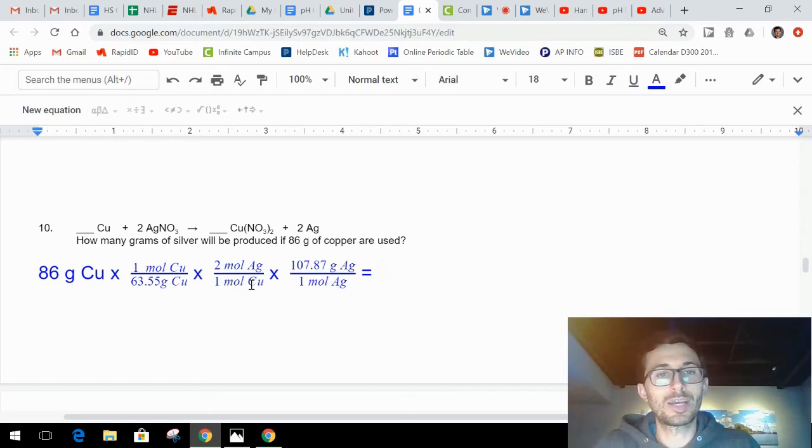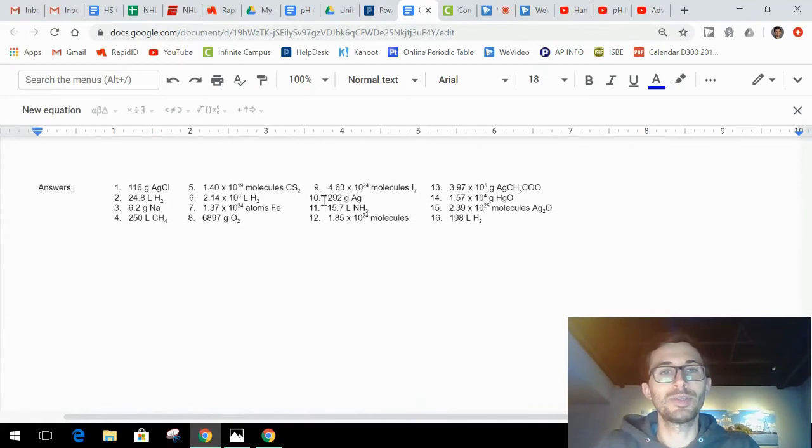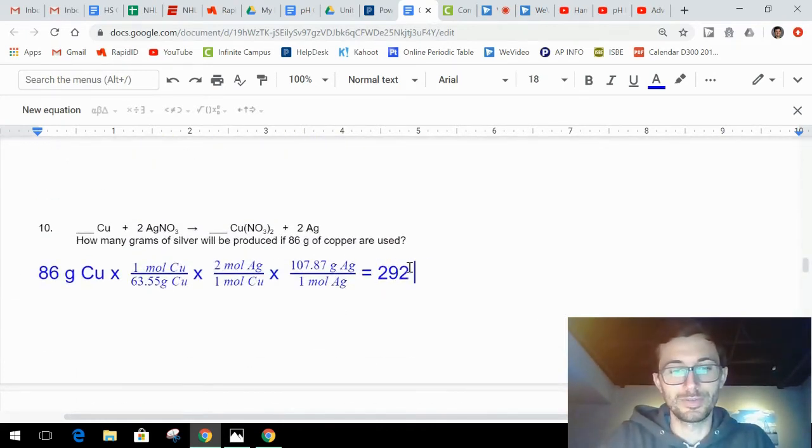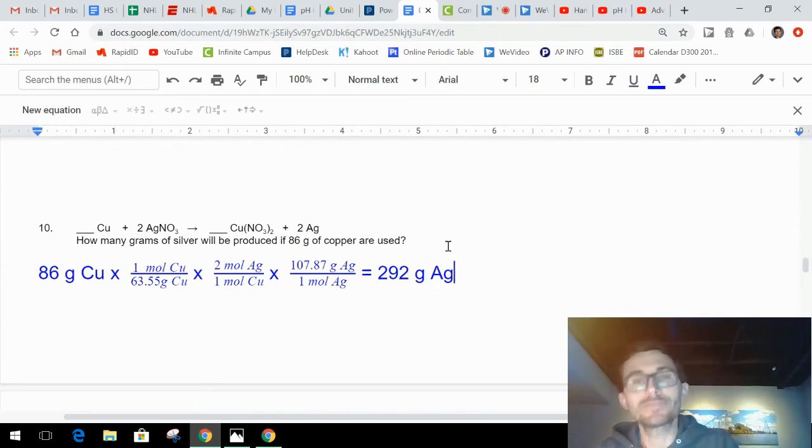Grams of copper cancel out, moles of copper, moles of silver. There we go, grams of silver. You're in grams of silver, so you are good to calculate. From the math it should be 292 grams of Ag. I'm going to type that in: 292 grams of silver. 3-step, it takes longer obviously, but just take your time and you will be fine. Make sure you show all your work, cancel out all your units and your substances, and you'll be fine.